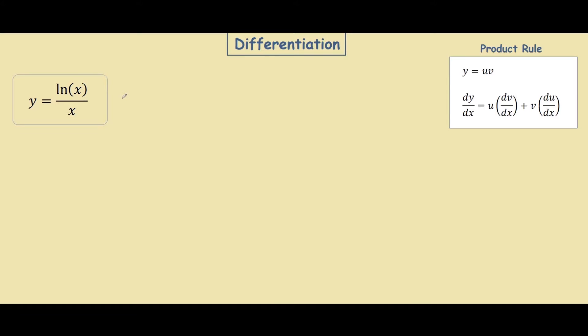So if we rewrite our equation, ln of x divided by x is actually the same thing as ln of x times x to the power of negative 1. And from here you can see that this term over here is our u and this term over here is our v.